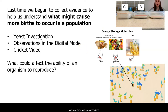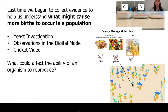We also took some observations in the digital model and noticed that there are energy tanks under each of these different organisms. These energy tanks or energy storage molecules are changing in number — they're decreasing as these organisms were reproducing. We also saw that crickets, just like the yeast, were producing more births or experiencing more reproduction when more energy was available to them.